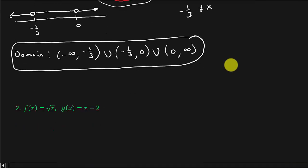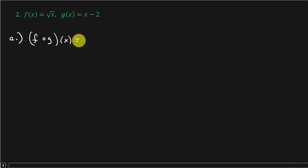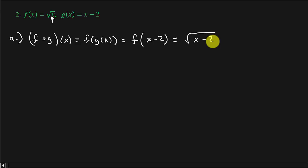Let's take a look at the next problem. We've got f of x equals the square root of x and g of x is equal to x minus 2. Let's look at part A. We want to do f circle g of x, which equals f of g of x. That's equal to f of x minus 2 — well, g of x is x minus 2. So we take the x minus 2 and put it in the place of that x, and we get the square root of x minus 2. That's the answer to part a.